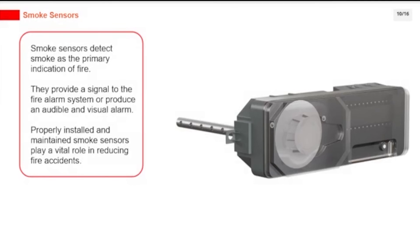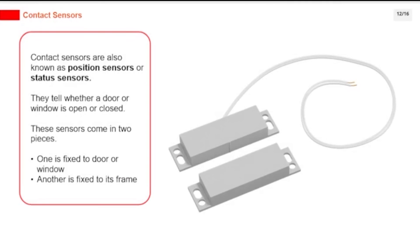Smoke sensors detect smoke as the primary indication of fire. They provide a signal to the fire alarm system or produce an audible and visual alarm. Properly installed and maintained smoke sensors play a vital role in reducing fire accidents. Contact sensors, also known as position sensors or status sensors, tell whether a door or window is open or closed. These sensors come in two pieces — one is fixed to the door or window, and the other is fixed to its frame.